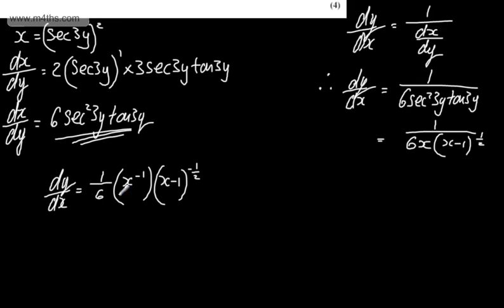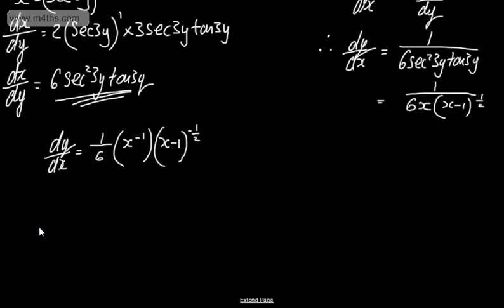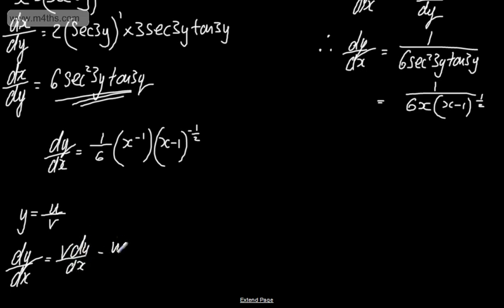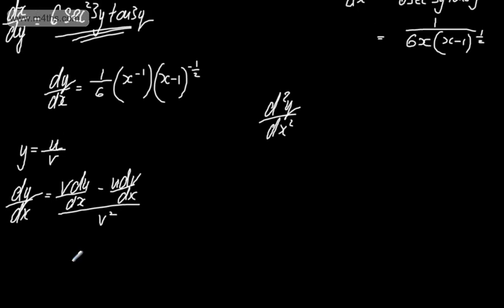Alternatively we could treat it as a quotient — I'm going to use the quotient rule, as I think it will be easier to manipulate at the end. The quotient rule states: if y = u/v where u and v are both functions of x, then dy/dx equals (v·du/dx minus u·dv/dx) all over v squared. We need the second derivative d²y/dx².